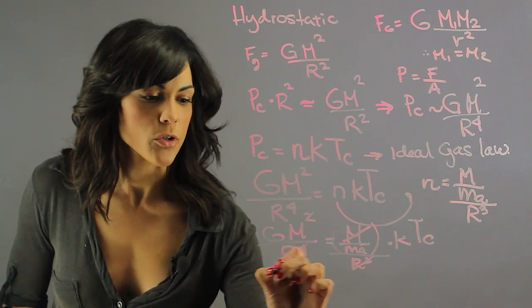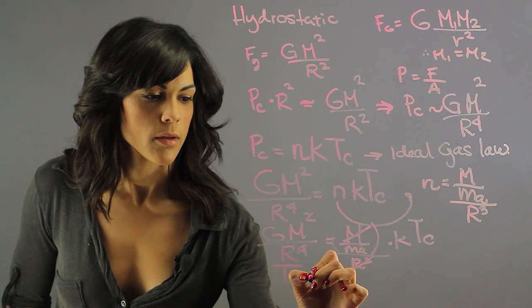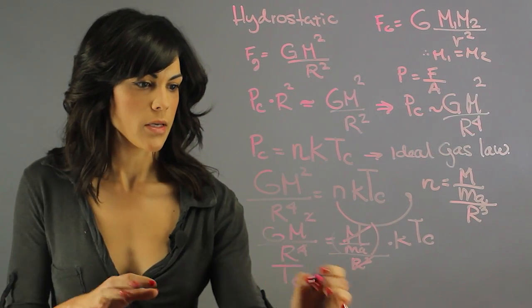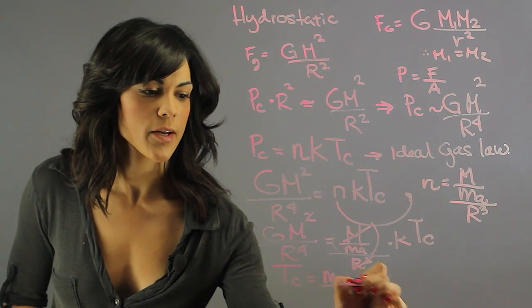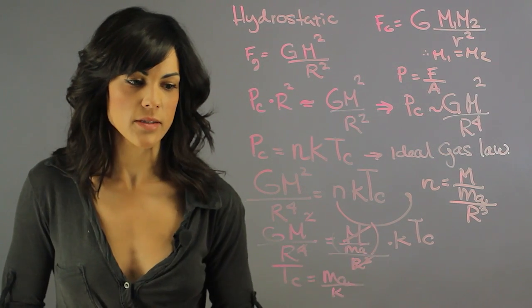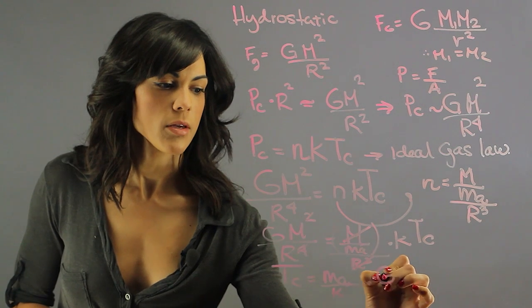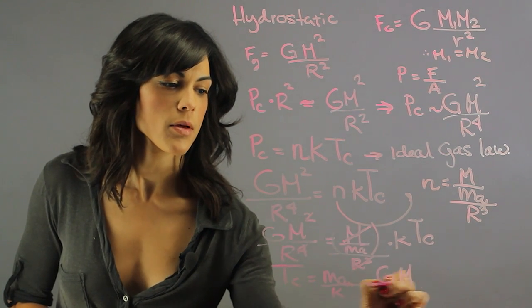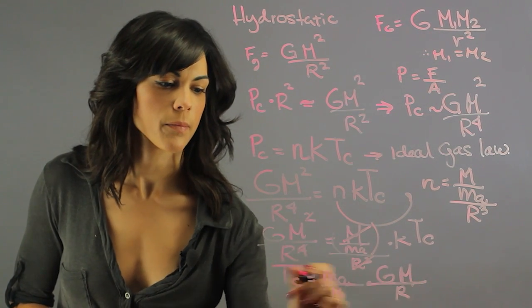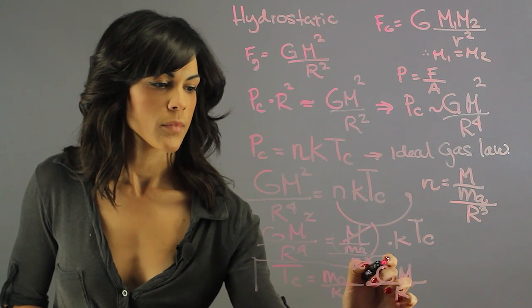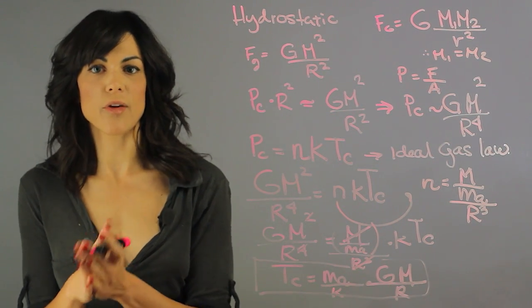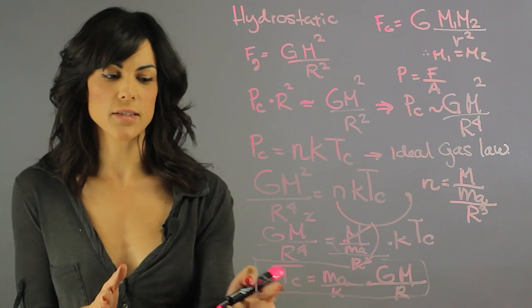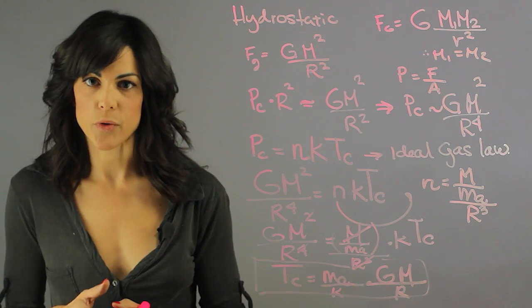So the temperature of the core, and this is getting a little messy, we multiply the mass of an individual atom divided by the Stefan Boltzmann constant times G times m divided by r. And this can give you a pretty crude estimation, but it's actually going to get very close to the temperature of the core. And this is kind of how we calculate the temperature of the core.